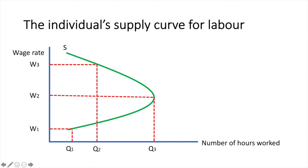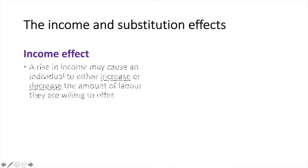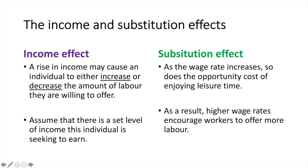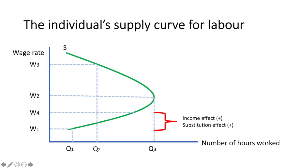In order to understand this, we have to revisit the income and substitution effects. The income effect can be positive or negative. A positive income effect results in a worker increasing the amount of labour they offer as the wage rate rises; a negative income effect results in less time being offered. The substitution effect will always be positive — as the wage rate increases, so does the opportunity cost of enjoying leisure time, encouraging workers to offer more labour. In the wage rate range W1 to W4, both effects are positive, resulting in more time being offered for work.